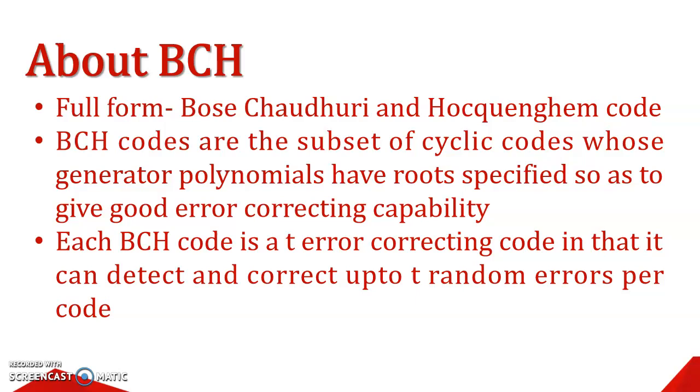BCH Codes are the subset of cyclic code whose generator polynomials have roots carefully specified so as to give good error correcting capability. So, we can say BCH Code is better than linear or cyclic code, in that it can correct more number of errors occurring in the code.